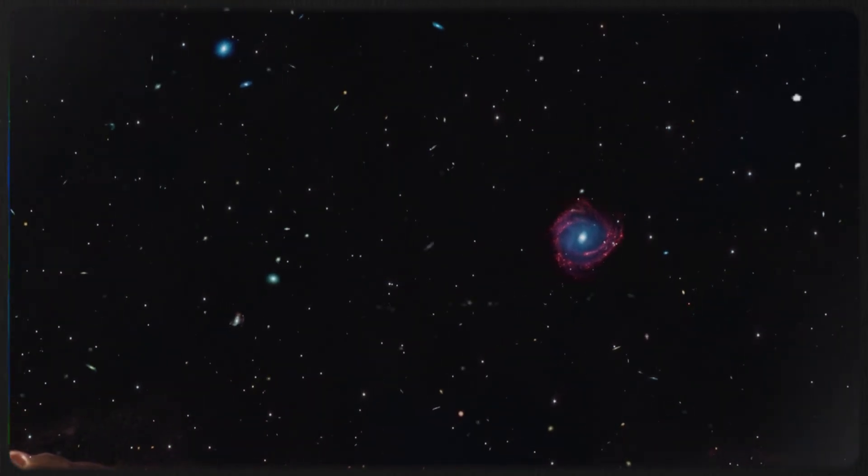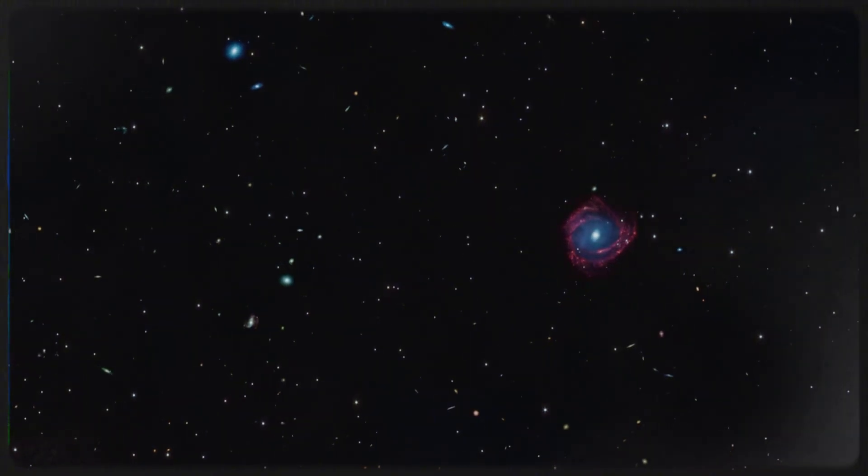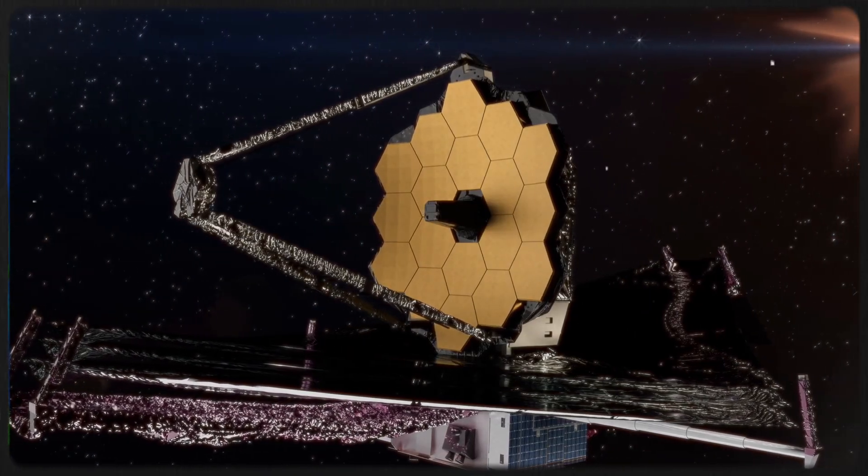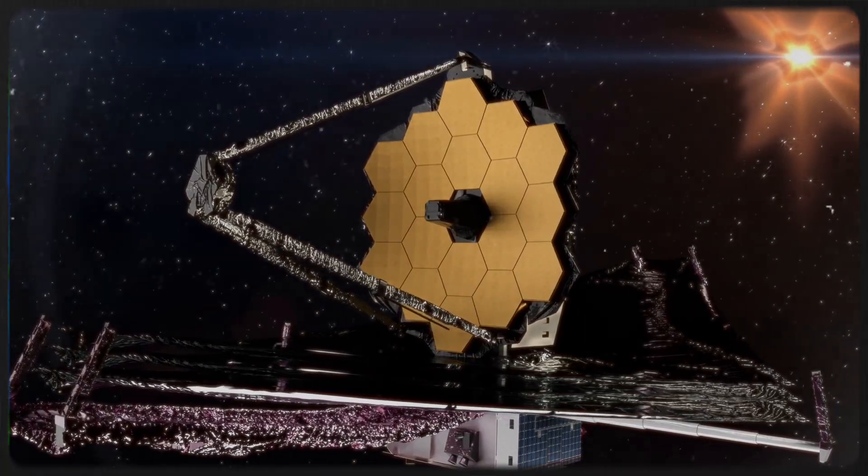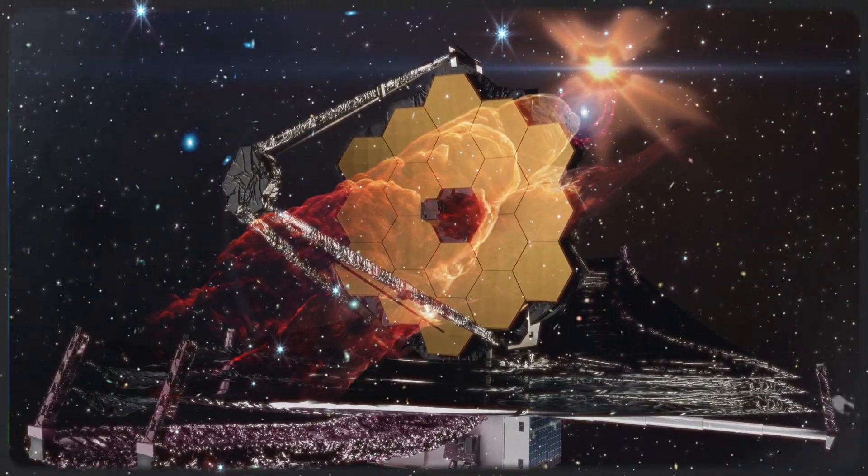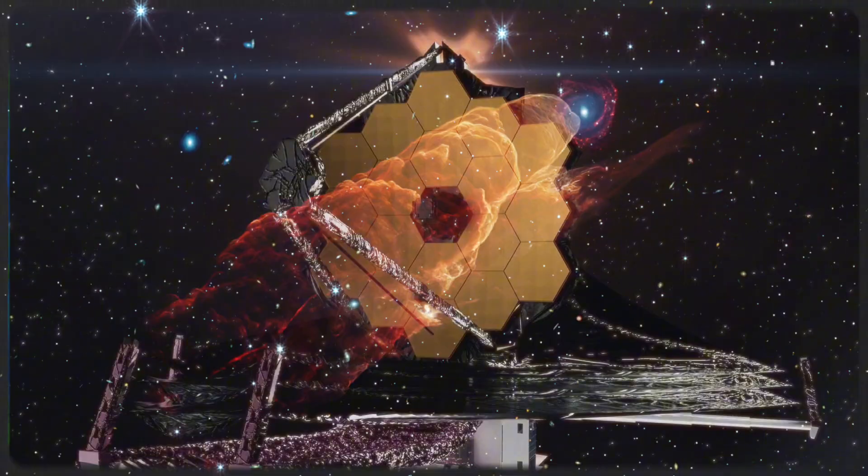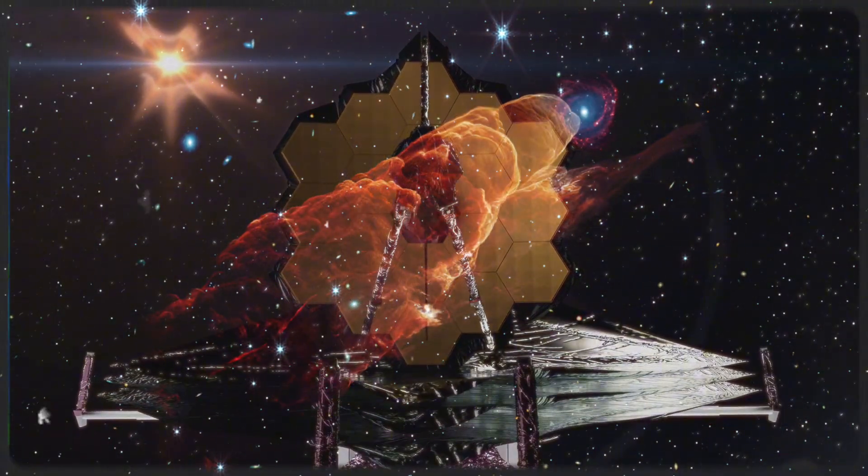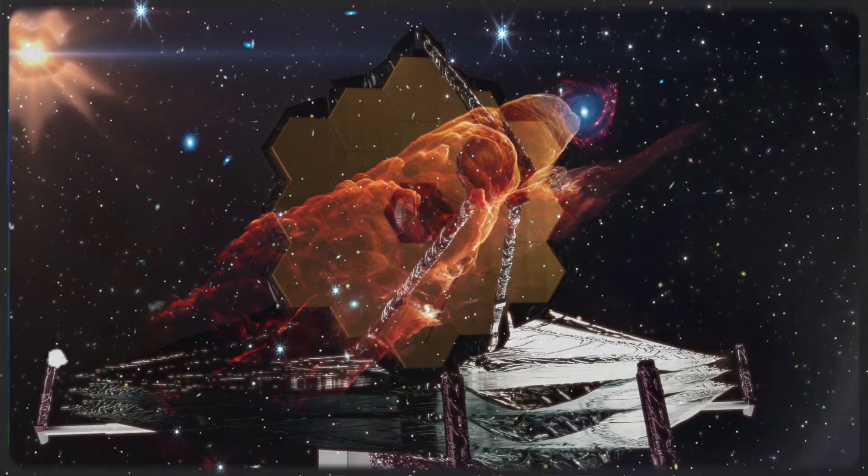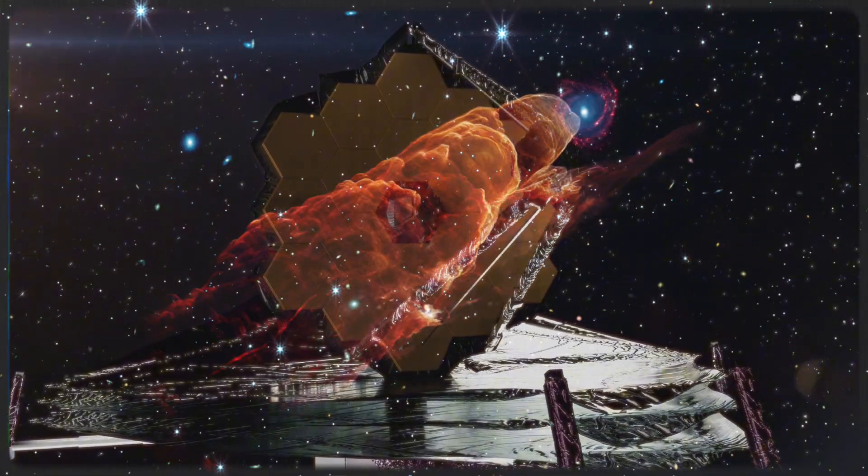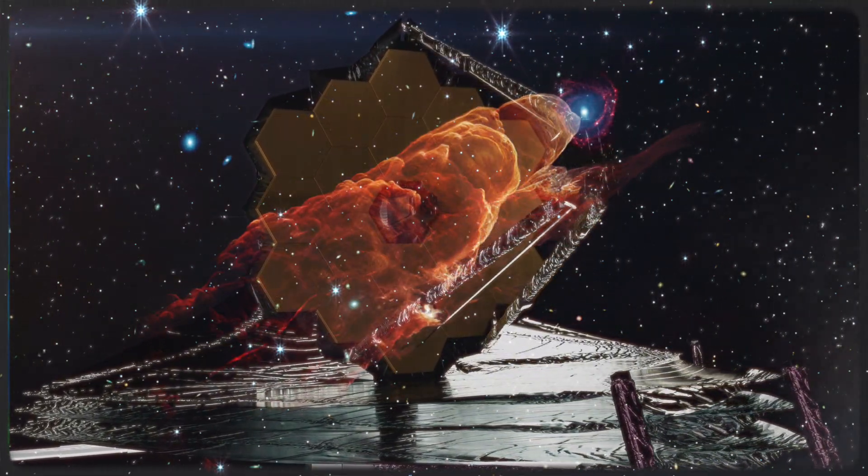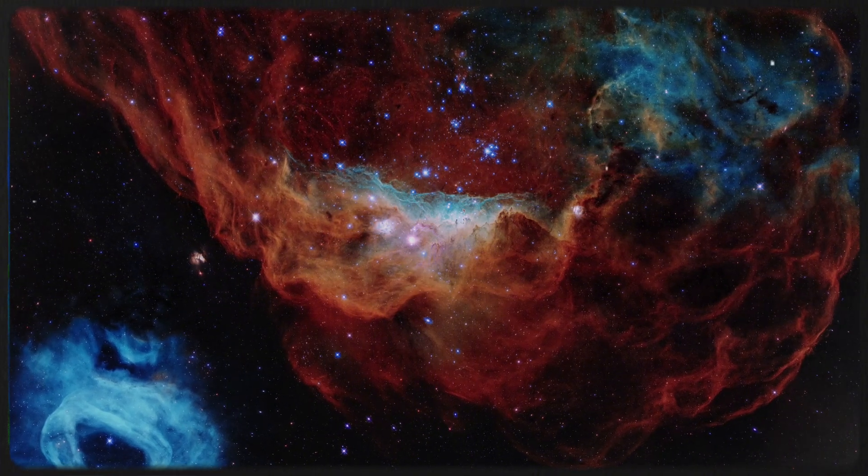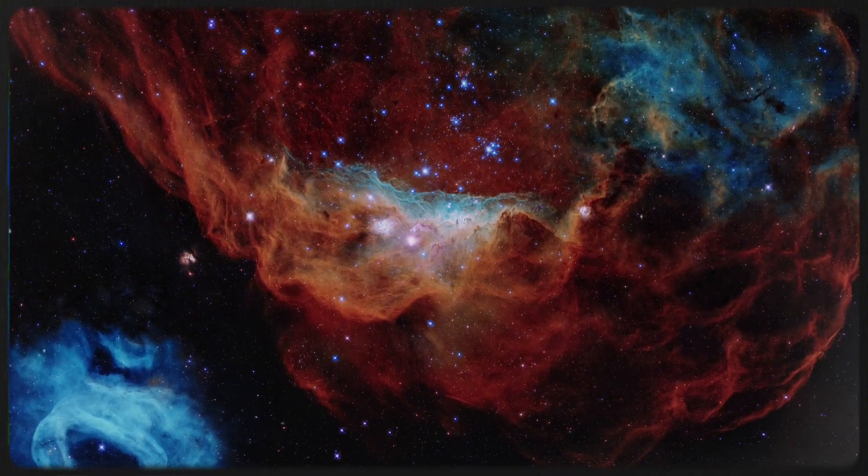But it's Webb's ability to probe smaller spatial scales that makes these observations truly groundbreaking. Through its detailed images, we can trace the path of energized dust grains, luminous hydrogen molecules, and carbon monoxide molecules, all of which are carried by the fast-moving protostellar jet as it slams into the surrounding material. This provides astronomers with a much clearer picture of how this jet is interacting with the surrounding gas and dust.